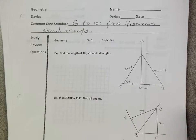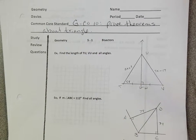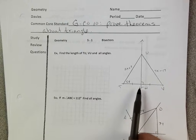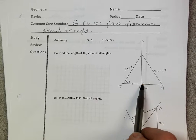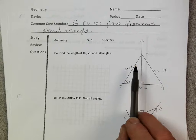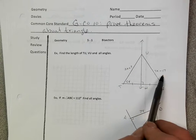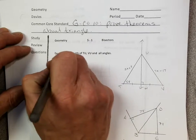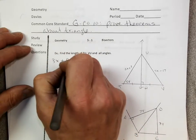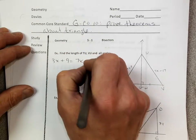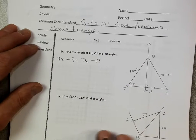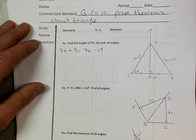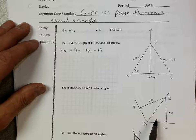So example one, find the length of TU, of VU, and all the angles. Okay, so first of all, right off the bat, if this is equal to this and this is perpendicular, then it does make an isosceles triangle. Therefore, this side TU must be equal to UV. We just learned that theorem. How do we know that it's an isosceles triangle? Because there's no hash mark saying that it's the same. Great question.